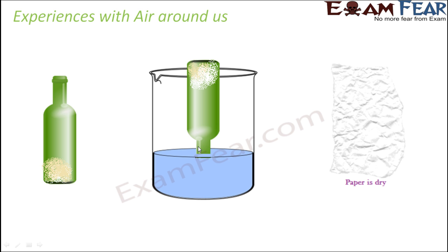Now let's try the same thing with a piece of paper. You do the same experiment, but this time take a paper, roll it and crumble it to form a ball, and put this ball inside the bottom of the bottle. Now perform the same experiment and at the end you will see that the paper is completely dry. This proves there was no water present inside the bottle. So this is another way to prove the same thing — air is present around us. Nobody guessed there could be something inside the bottle, but it actually contained air.